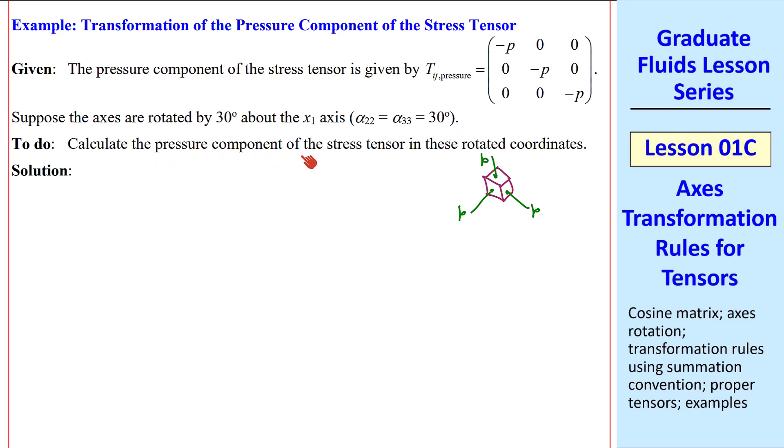Let's calculate the pressure component of this stress tensor in these new rotated coordinates. From our table for a second-order tensor, we had A'_MN = C_IM C_JN A_IJ. Again, M and N are free variables, but I and J are both repeated, so we sum up over I and J. Here, T'_MN pressure equals C_IM C_JN T_IJ pressure. This is the equation we'll use to do our transformation.